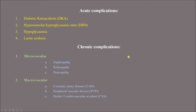The complications of diabetes can be acute or chronic. Acute complications include diabetic ketoacidosis (DKA), hyperosmolar hyperglycemic state (HHS) — previously known as hyperosmolar non-ketotic coma — hypoglycemia, and lactic acidosis. Chronic complications can be microvascular or macrovascular. Microvascular complications include diabetic nephropathy, diabetic retinopathy, and diabetic neuropathy.